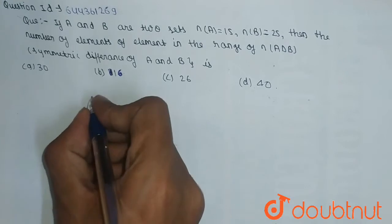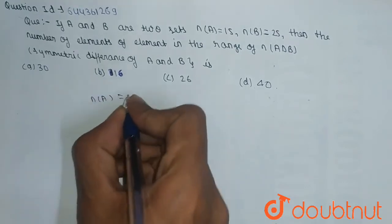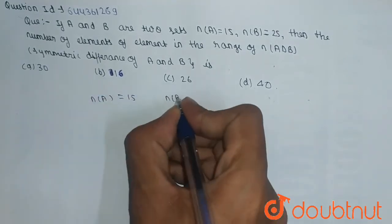So we have given that n(A) is equal to 15 and n(B) is equal to 25.